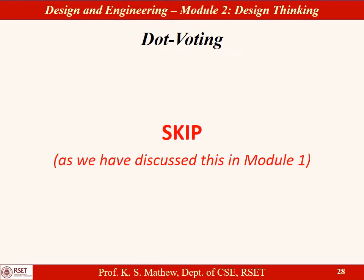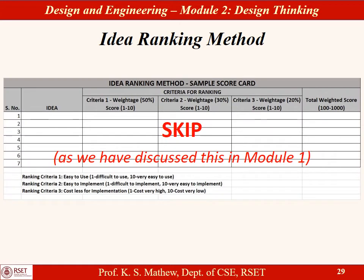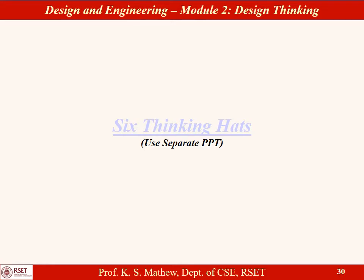Dot voting and idea ranking method were already covered in Module 1, so they will be skipped here. Six Thinking Hats is another novel technique introduced by Dr. Edward de Bono — used to solve problems, choose the best alternative from a set of options, make decisions, and make meetings more effective. It is based on the concept of parallel thinking.